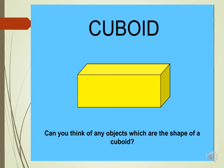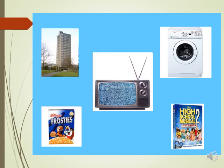Can you think of any objects that are the shape of a cuboid? We have many — TVs, books, cereal boxes, and buildings. So many choices that you can see around you in solid objects.